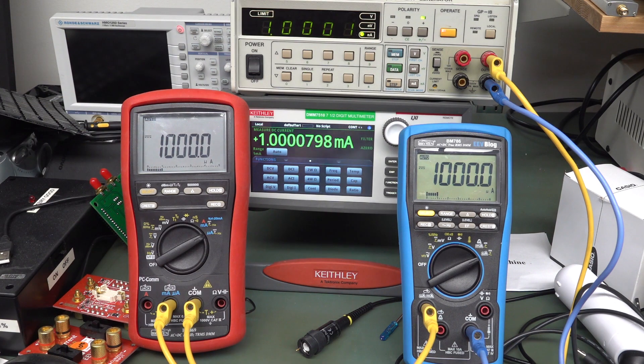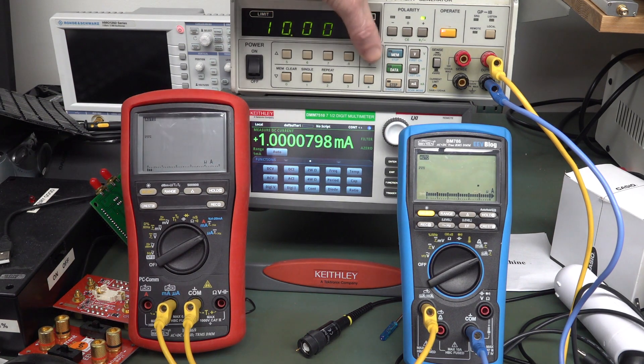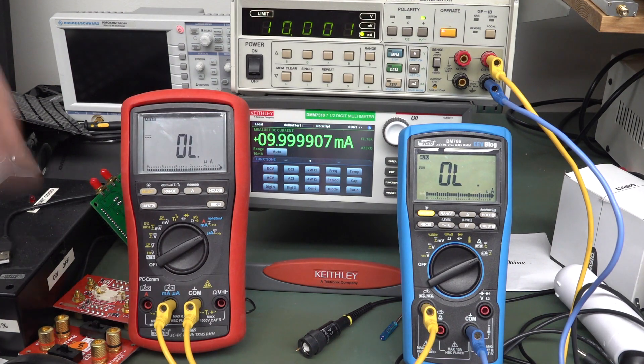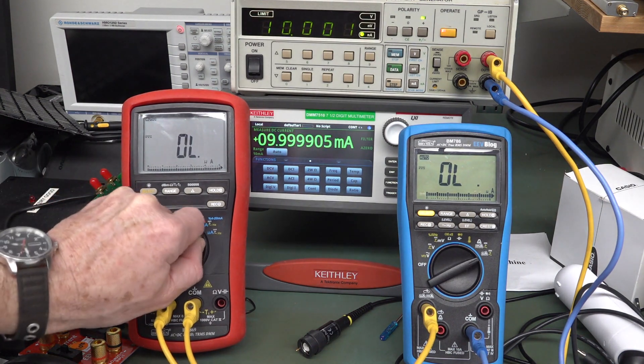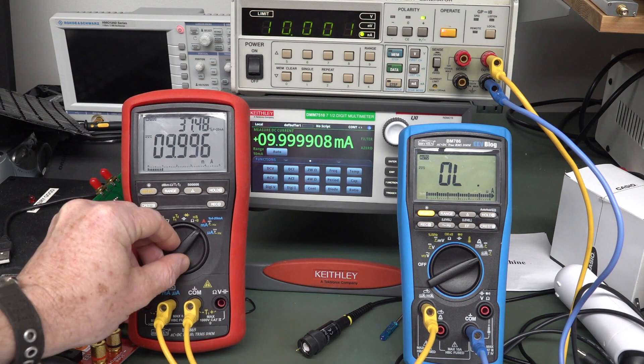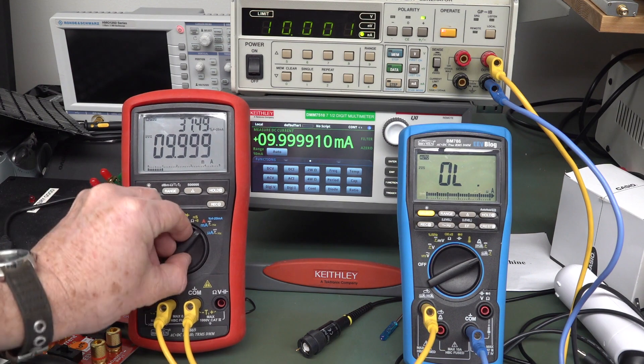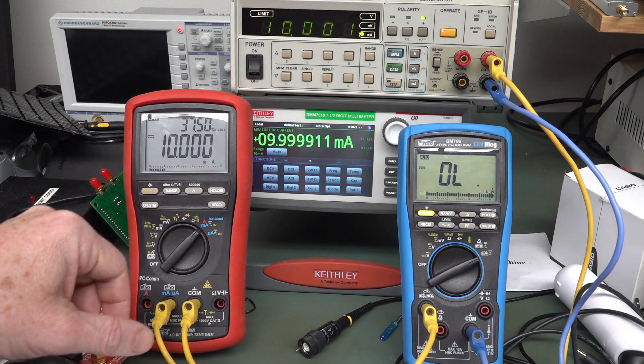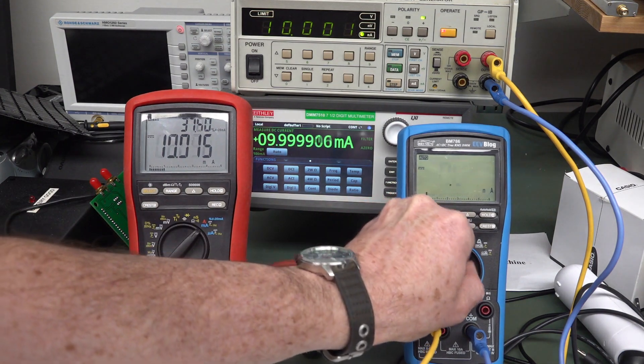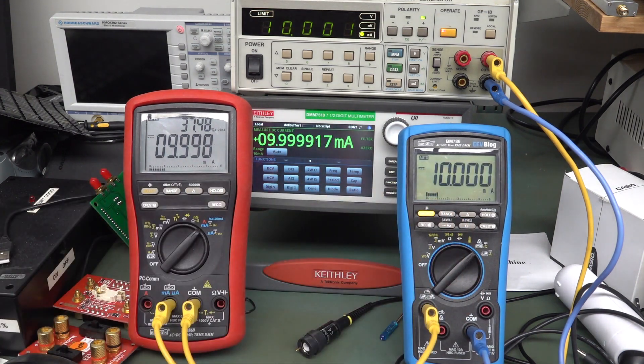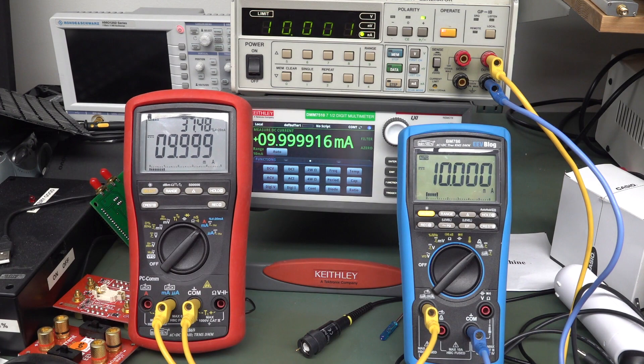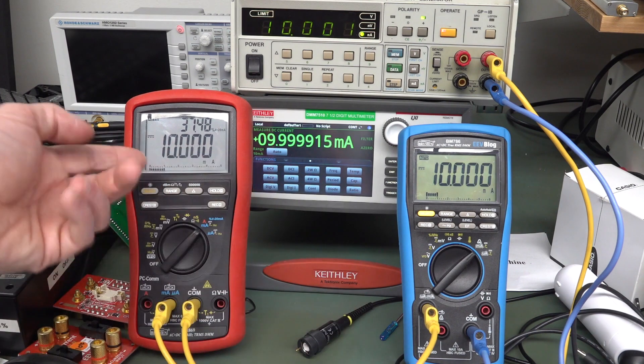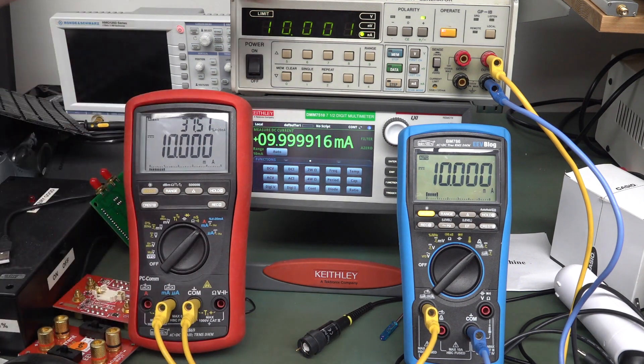They're both bang on in that regard. So we can actually up the range on that. We can go to the 10 milliamp range. We're going to have to go up a range here. There we go, 9.8. In fact, yeah, that won't do it because we're over the 6,000 count range. There you go, bang on. No problems whatsoever.